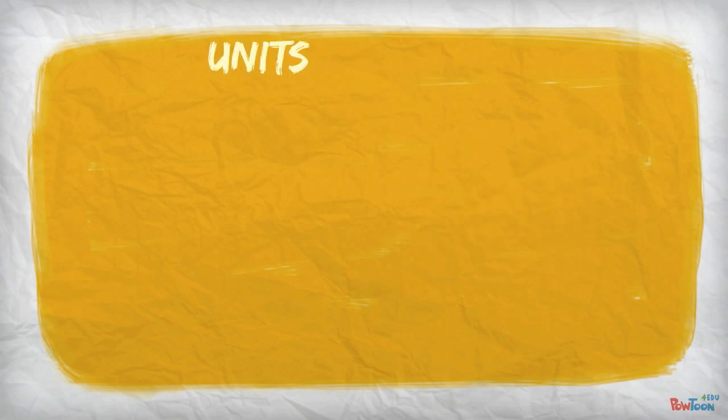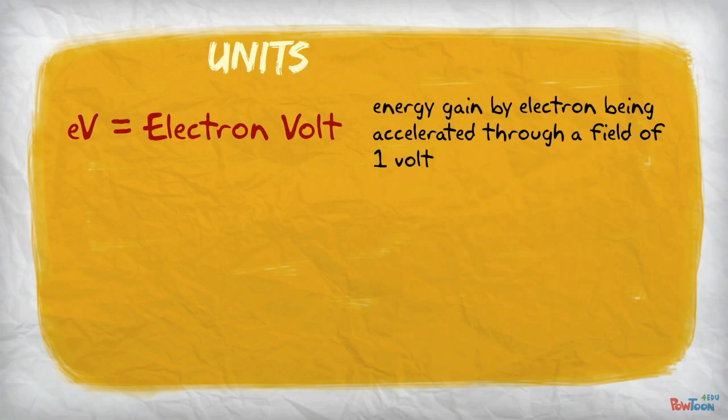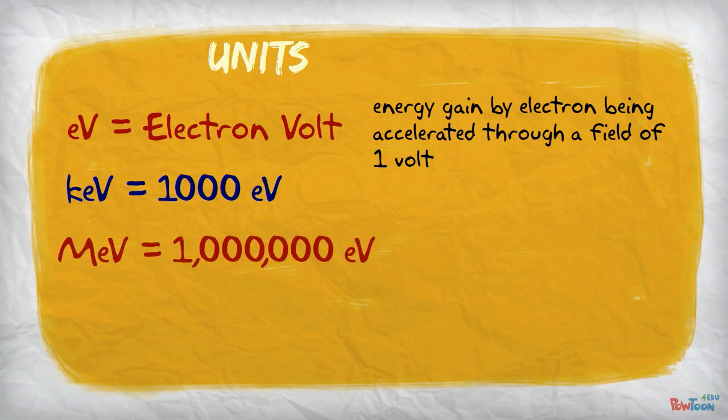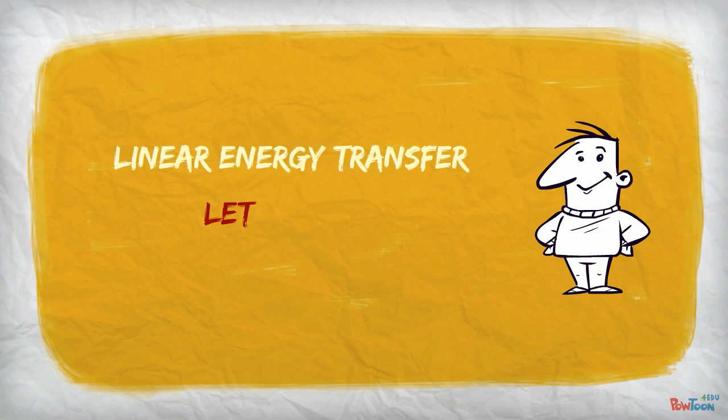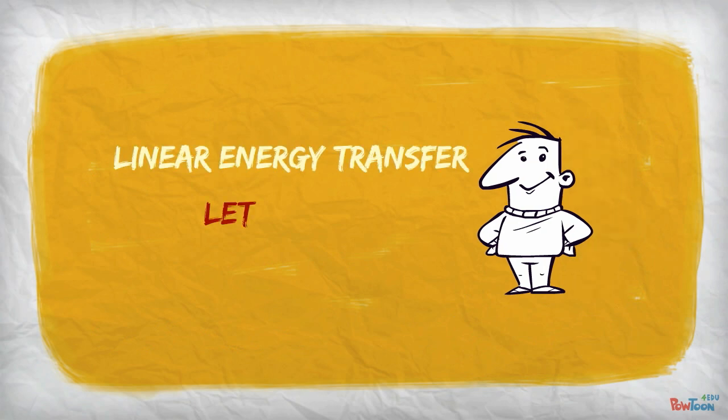Let's take a look at some units that you should already know well. The electron volt is the energy gained by an electron which is accelerated through a field of one volt. Also, note that the electron volt can be converted to joules. Now, as we begin to look at radiation damage to tissue, let's first look at linear energy transfer, or LET.